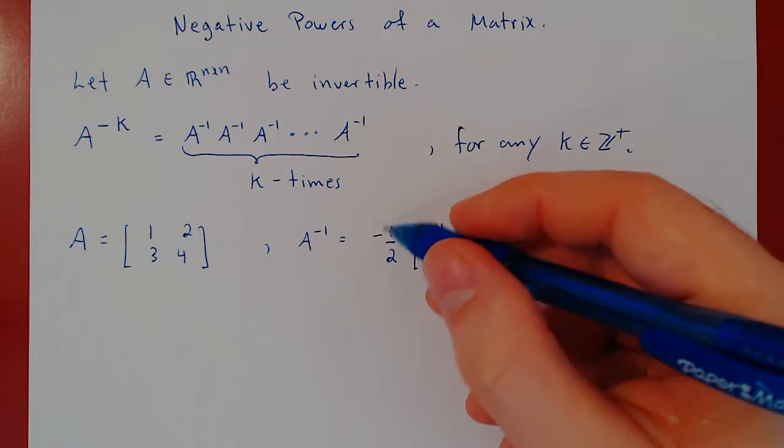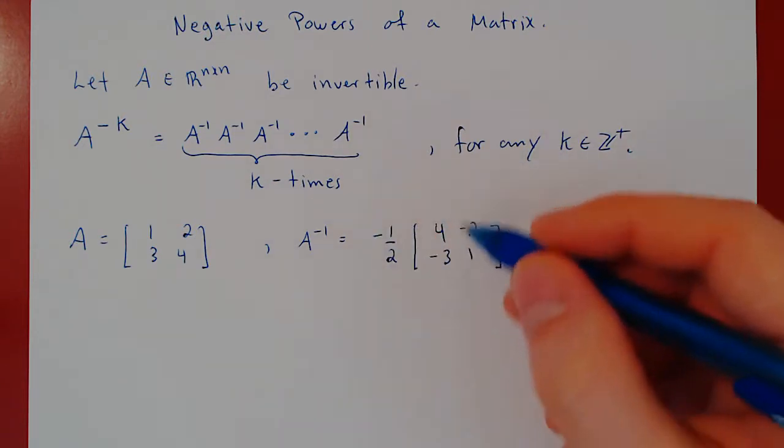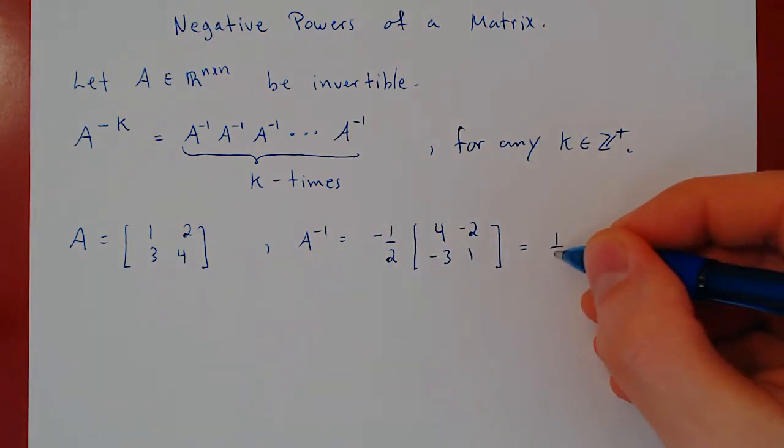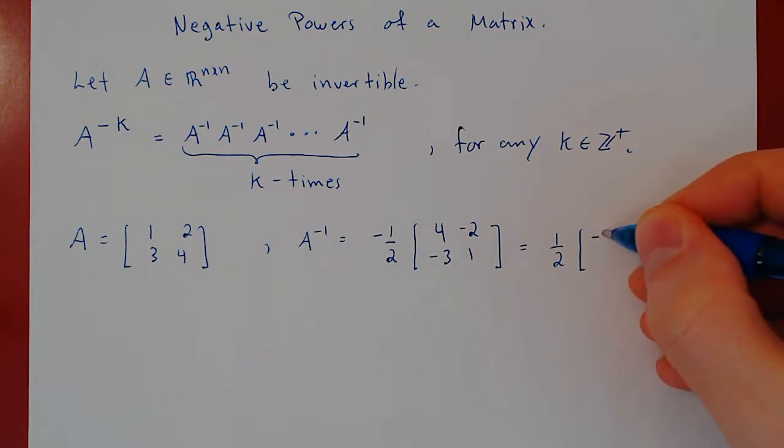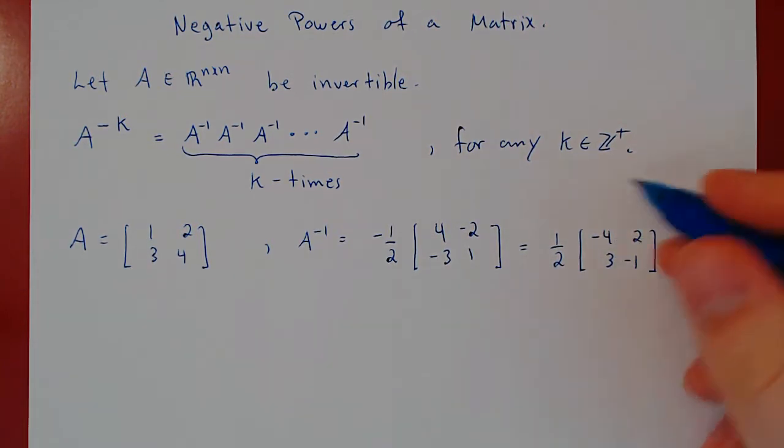Now, let's not leave the negative here, let's multiply it through, but leave the 1 half outside, which will give us negative 4, 2, 3, negative 1. So, here's A inverse.